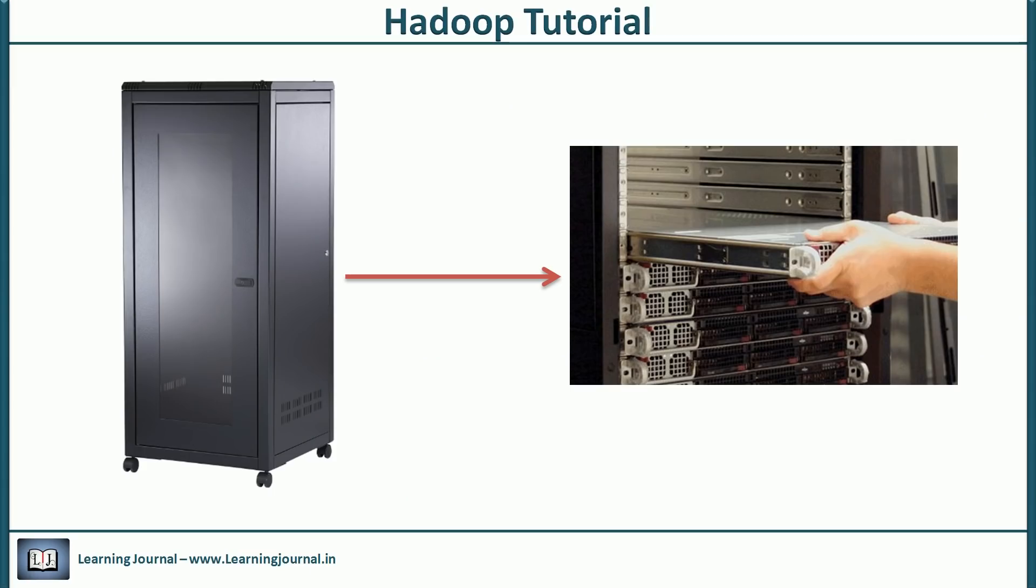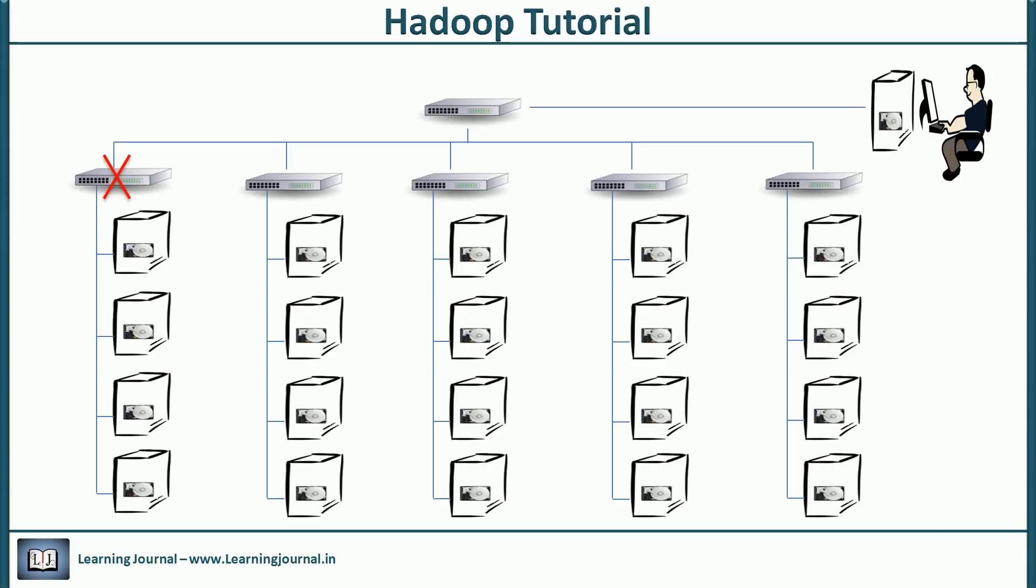The rack is nothing but a kind of a box. We fix multiple computers into a rack. Typically each rack is given its individual power supply and a dedicated network switch. So if switch fails or there is a problem with the power supply of the rack, all the computers within the rack can go out of network. The point that I am trying to make is that there is a possibility of entire rack to fail.